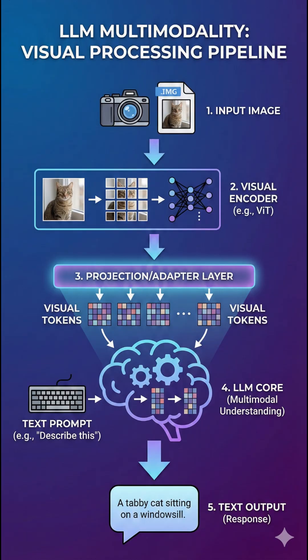This is how it works. Let's say you start with an image as an input. This image needs to be converted into a format the model can understand, so it is broken up and converted into numerical vectors by the encoder. The LLM can then read the image and process both visual and text tokens together.